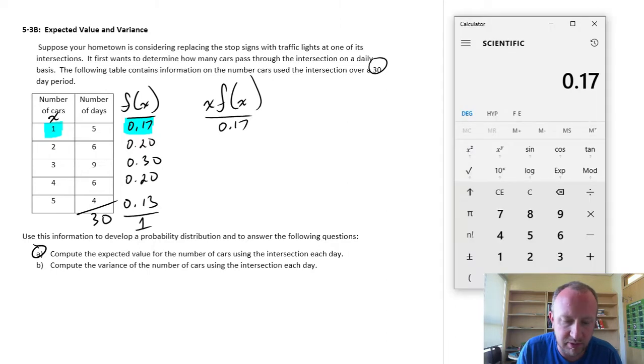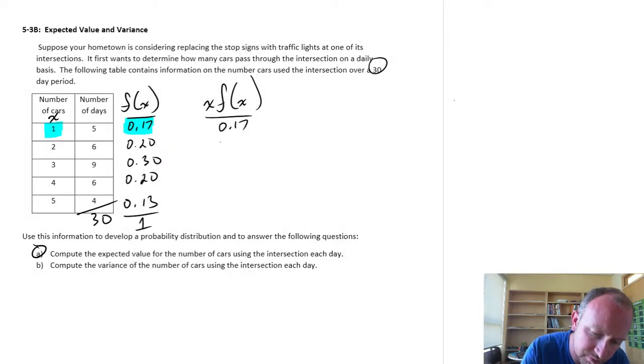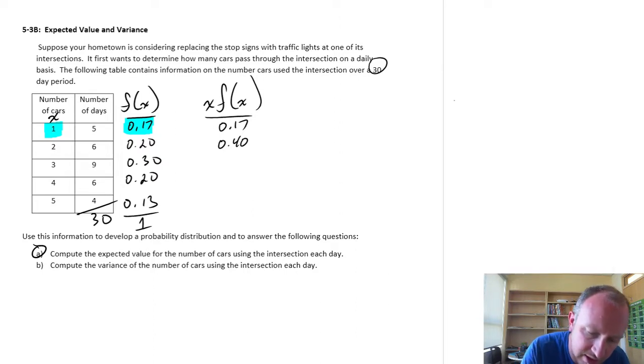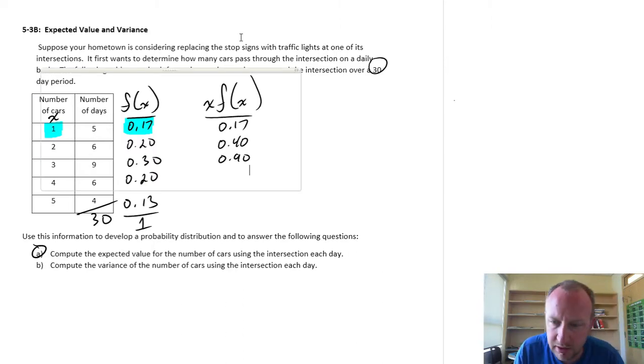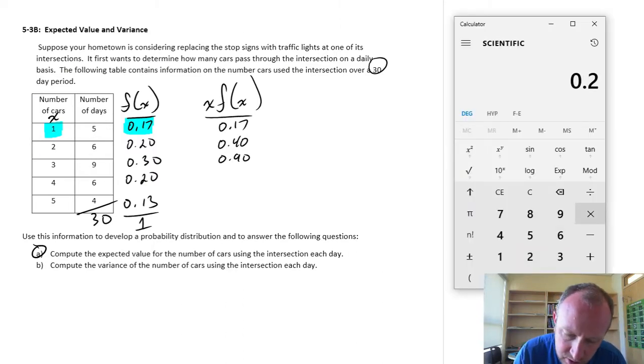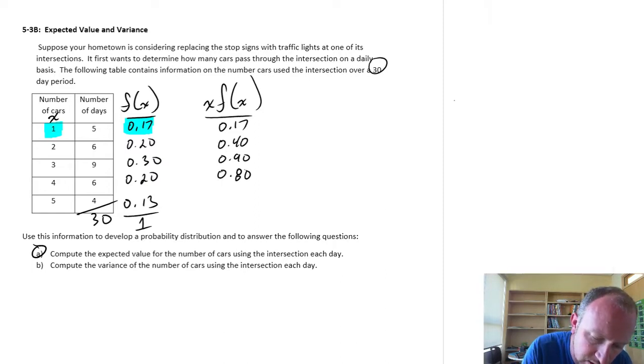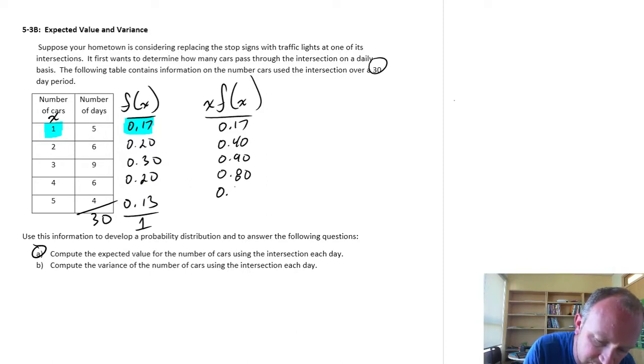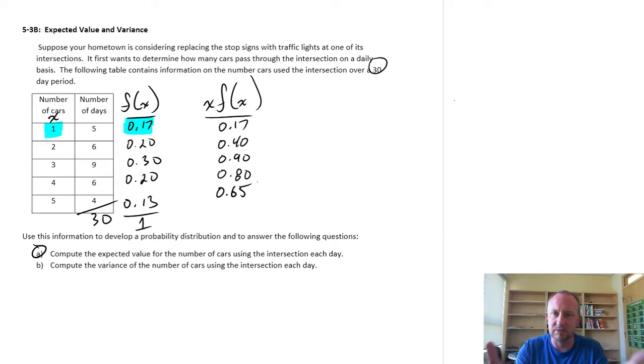The next one, this is going to be 0.2 times 2, so 0.4. And the next one, 0.3 times 3, 0.9. And the next, 0.2 times 4, so 0.8. And finally, 0.13 times 5 is 0.65. So there we've got one of the intermediate steps done.